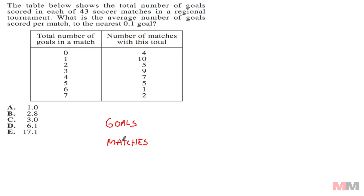The number right here, 43 soccer matches, tells you exactly how many matches there are, so we're going to put 43 at the bottom. By the definition of an average, I have to sum up 43 items on the top. If you look at the table, there's not even 43 numbers given to us, so this is the part where you got to think and read. Total number of goals in a match: zero. Number of matches with this total: 4. That means in four games they scored zero points, and that pattern repeats.